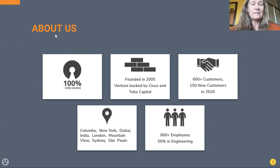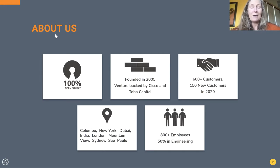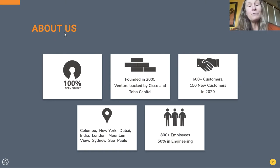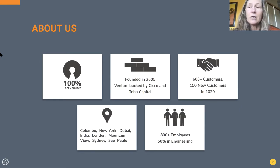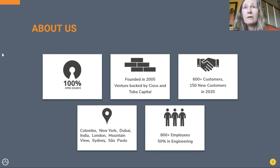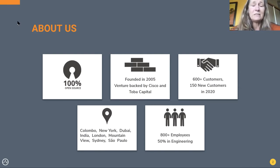We're vendor agnostic, which is a key differentiator in the market, and financially well-backed going back to 2005 by Cisco and Toba Capital, with significant growth especially over the last one to two years — 600-plus customers and 150 new customers. Some of you may know us from the API integration space, however CIAM is a very strong portfolio within our business. Across the ANZ region there's a lot of emphasis on new employees — approximately seven people added today with additional headcount this year and into next year.